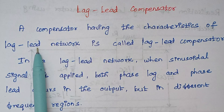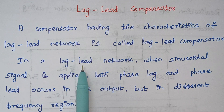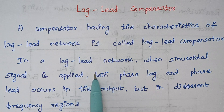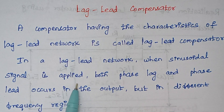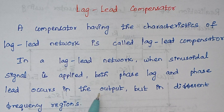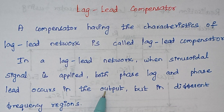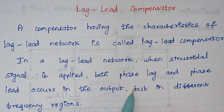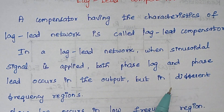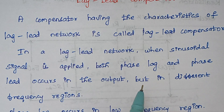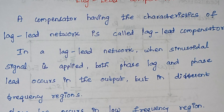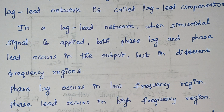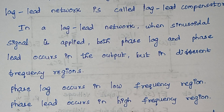What is meant by a lag-lead network? Both lag and lead occur in the same network but in different frequency regions. When a sinusoidal signal is applied, both phase lag and phase lead occur in the output — in different frequency regions. When they happen in the same frequency region, they cancel each other. So phase lag occurs in the low frequency region and lead occurs in the high frequency region.